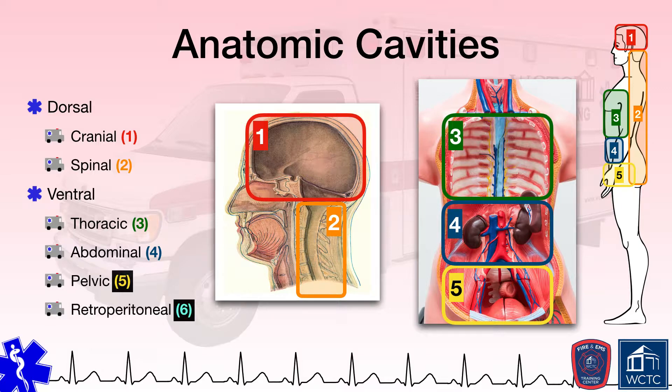Behind, posterior to the abdominal cavity, is the retroperitoneal cavity, which predominantly contains the kidneys.